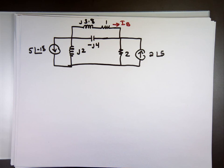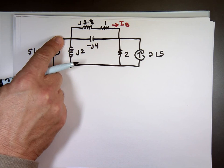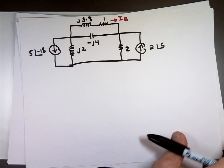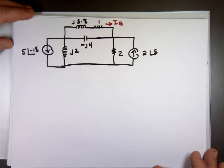Now, I can do source transformation if I want to. I can change this to a voltage source, put that up here, change that to a voltage source, and put that resistor up there. Is it going to make it easier? Not really.